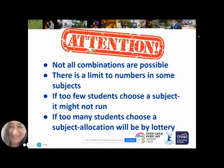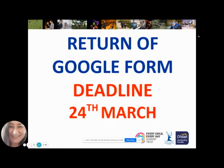We do need reserves because not all combinations are possible — it is simply not possible to fit every option choice into our restricted timetable. Very rarely do I need to tell students they cannot do their first choices, because we work very hard to make it all fit. Please also be aware that there may be a limit to numbers in some subjects; if too few students choose a subject it might not run, and if too many choose a subject the allocation will need to be by lottery. The important reminder is that the Google form must be returned by the 24th of March — this is the deadline, and we start immediately to input the data and work on the allocation.